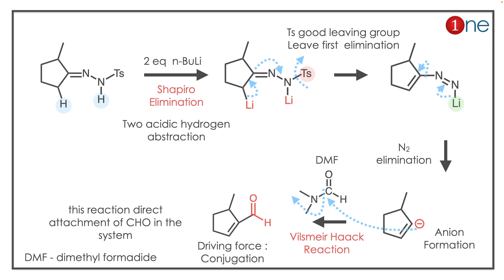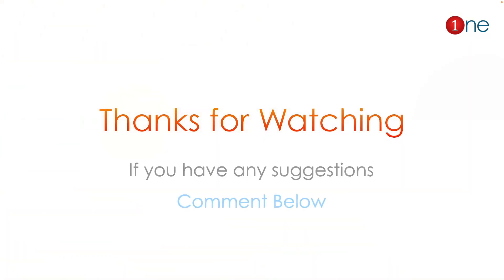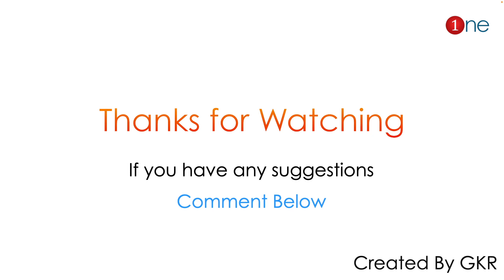Finally, you have aldehyde formation. The driving force for aldehyde formation is conjugation. So you have the final product. The key concept to learn here is Sommelet-Hauser elimination — it converts an amine into an alkene. That's all from this video. Thanks for watching; if you have any suggestions, comment below.